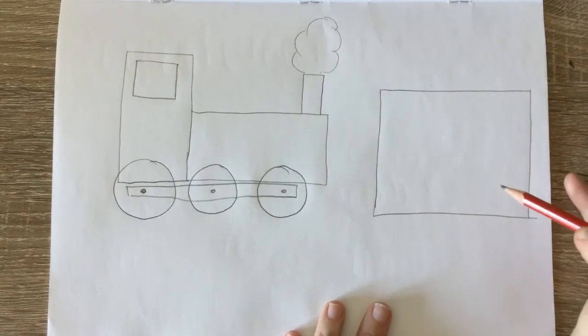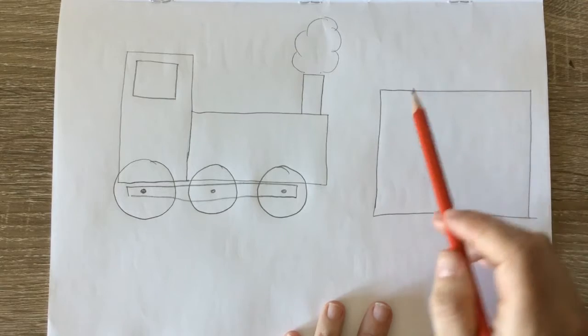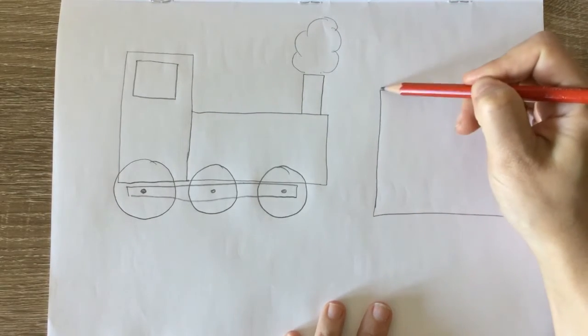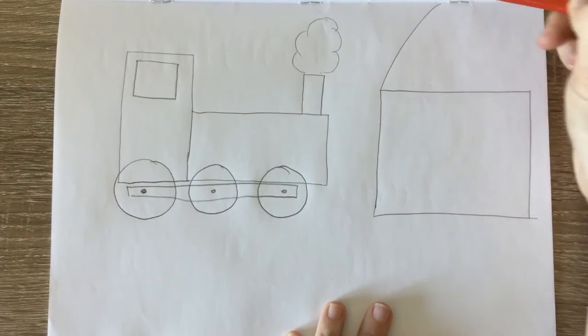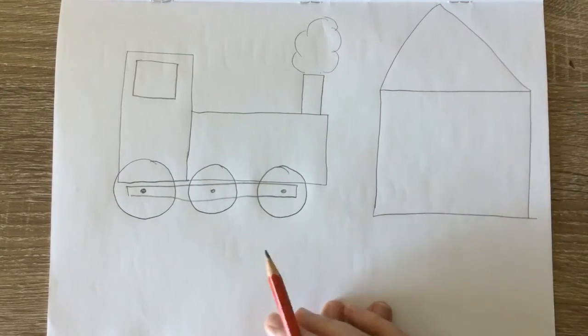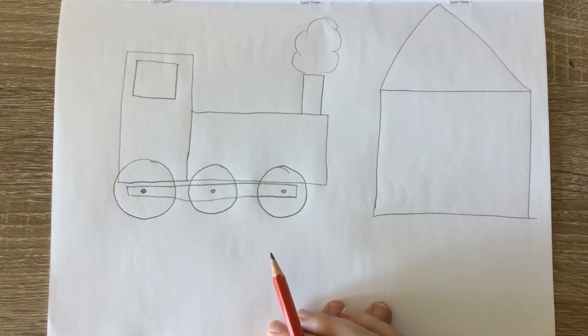Now I'm going to draw the roof of my house which I'm going to use a triangle. Triangles have three sides. Here's my first one. One. Two. Three. I've got three sides for my triangle.